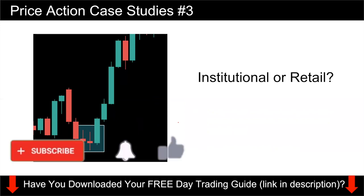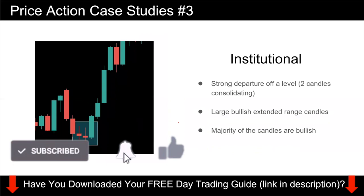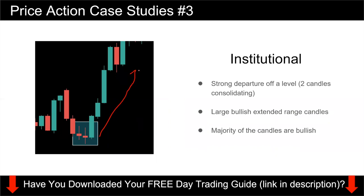This is actually institutional buying. Very simple — this is very clear cut. You see a strong departure of the level with only about two candles consolidating before price took off. You have large extended range candles — price closes at the top here, top, top. And the majority of candles are bullish. This is as clear as day — this is the kind of institutional buying you want to identify.